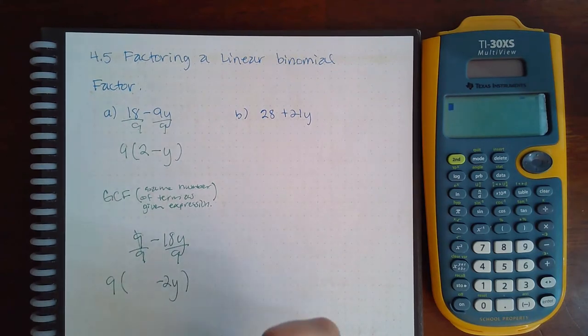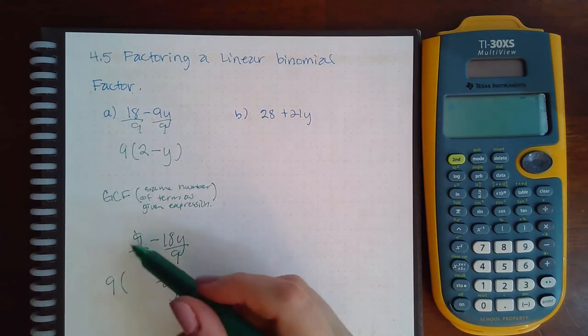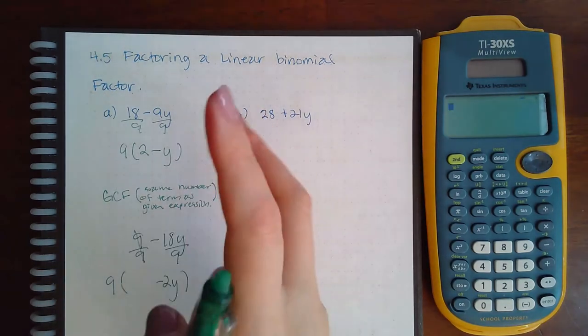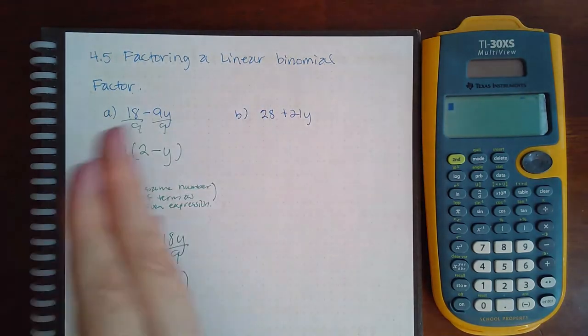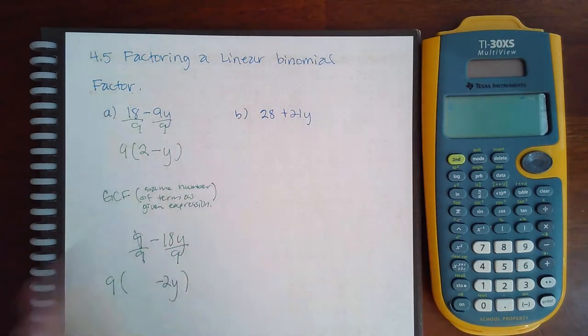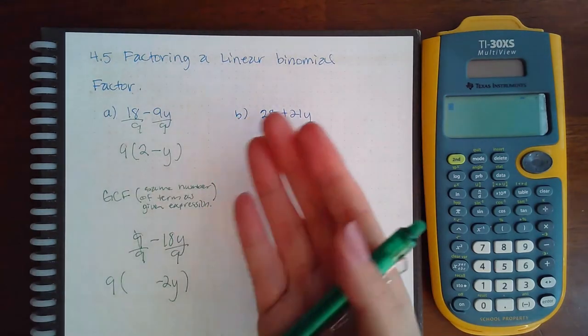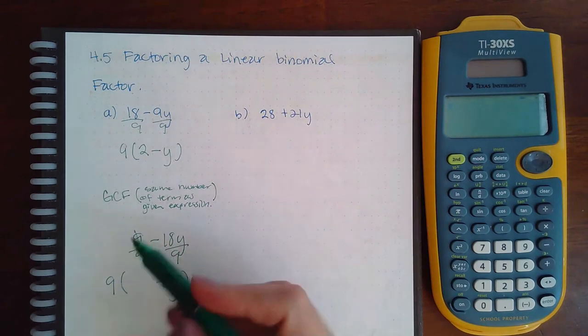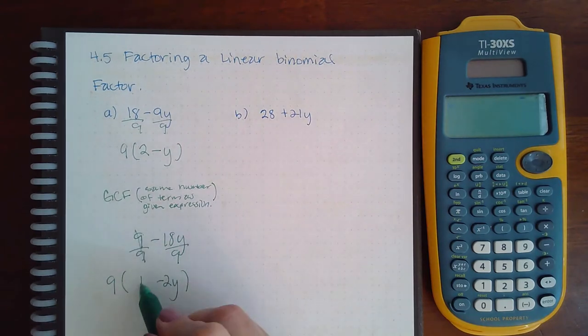That's incorrect. Those don't really cancel per se. The only things you can ever cancel is things that you add or subtract. Things that you divide actually don't cancel. What happens is they get reduced and 9 divided by 9 is actually 1.